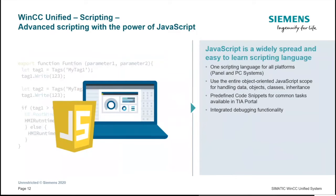Although WinCC Unified contains many standard tools for creating graphics, if you want to create something beyond those capabilities, you can do so using the advanced scripting capabilities in WinCC Unified. The scripting model gives you access to all the properties of all your objects, just like the standard functions, allowing you to script your own actions to those properties using JavaScript.